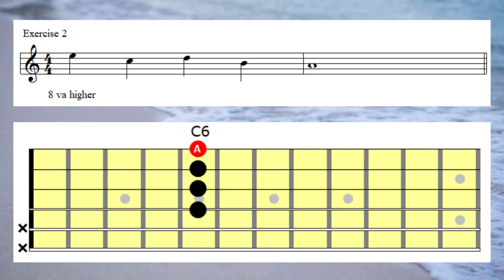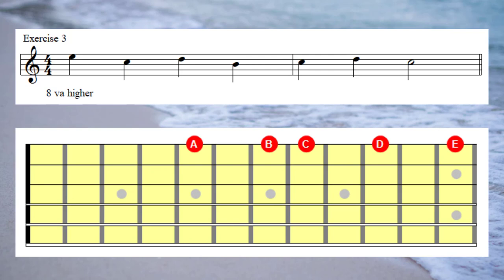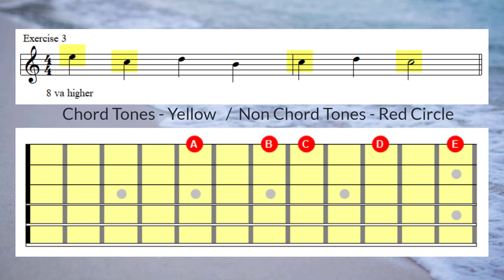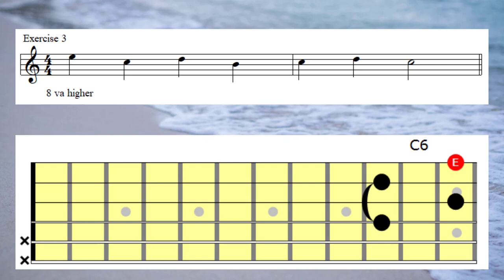Now to example number three. The melody notes are E, C, D, B, C, D, C. You'll see on this exercise I've marked in the chord tones and the non-chord tones, and you'll see the appropriate chord shapes that are played under each note. Let's have a listen to example number three.